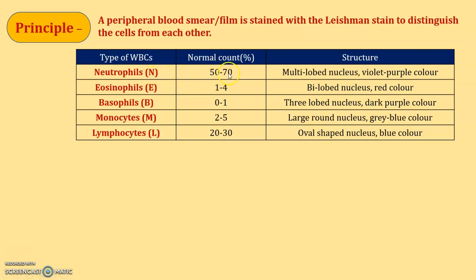Under the microscope, neutrophils appear violet-purple in color. Eosinophils are about 2 to 4 percent, denoted by capital E, red in color, having a bi-lobed nucleus structure. Basophils are 0 to 1 percent, dark purple in color. Monocytes are about 2 to 5 percent, gray-blue in color. Lymphocytes are about 20 to 30 percent, appearing blue in color.